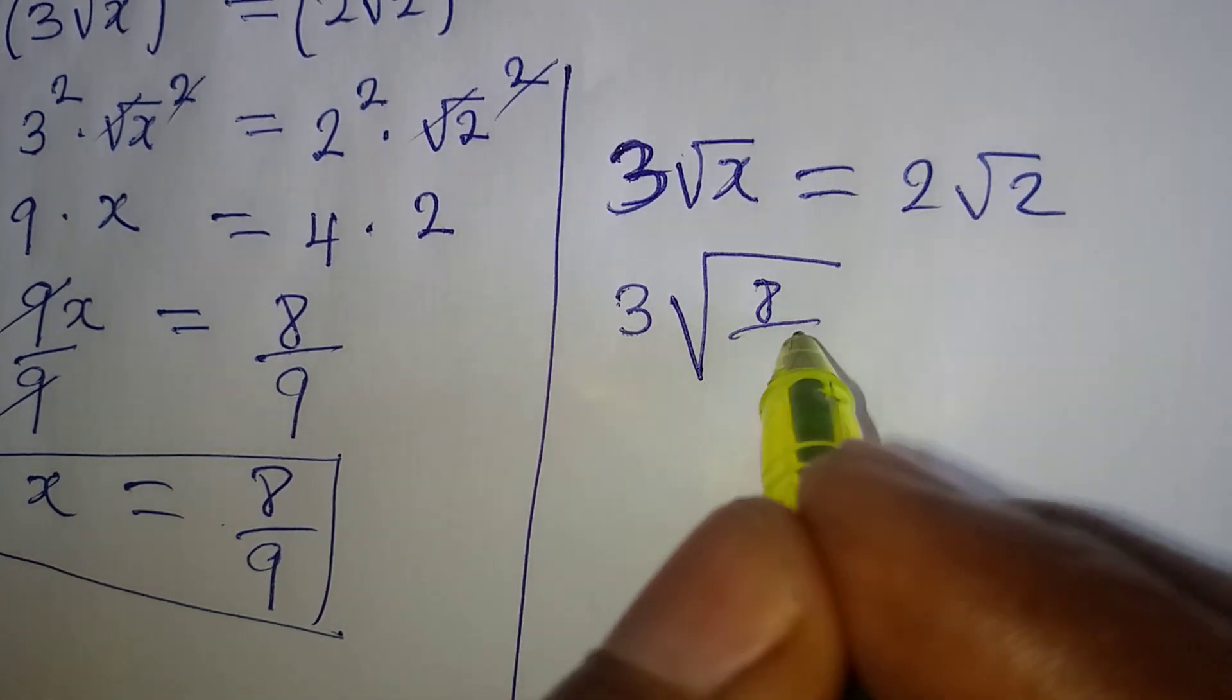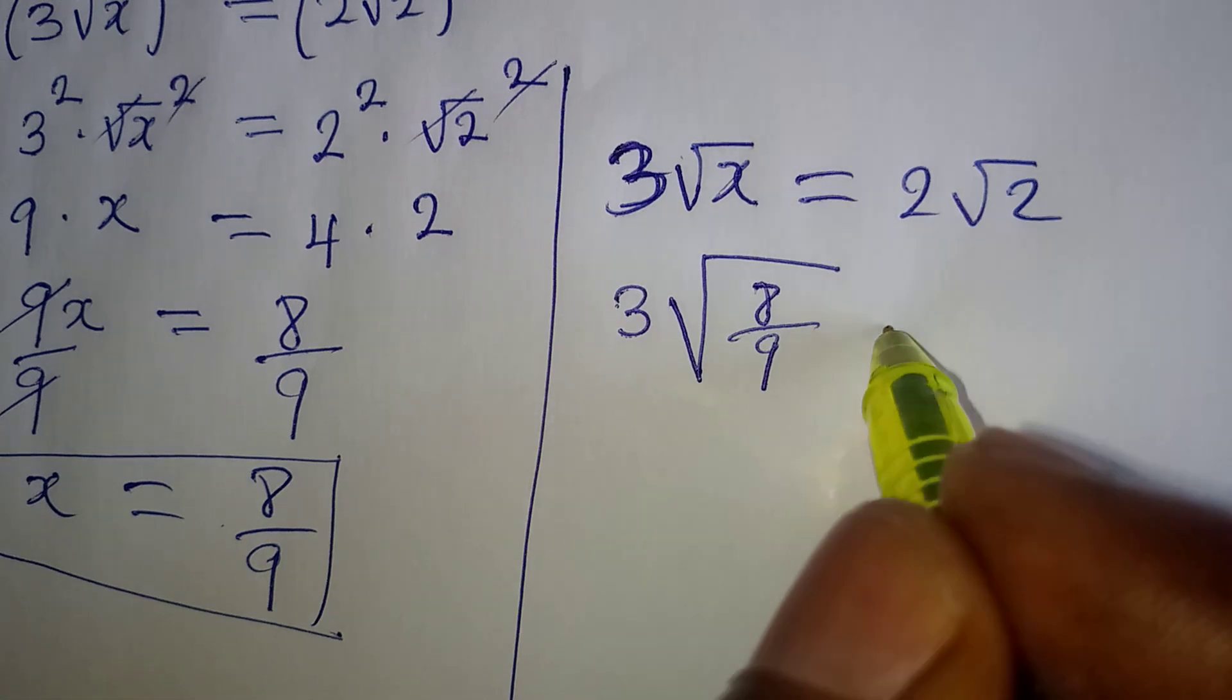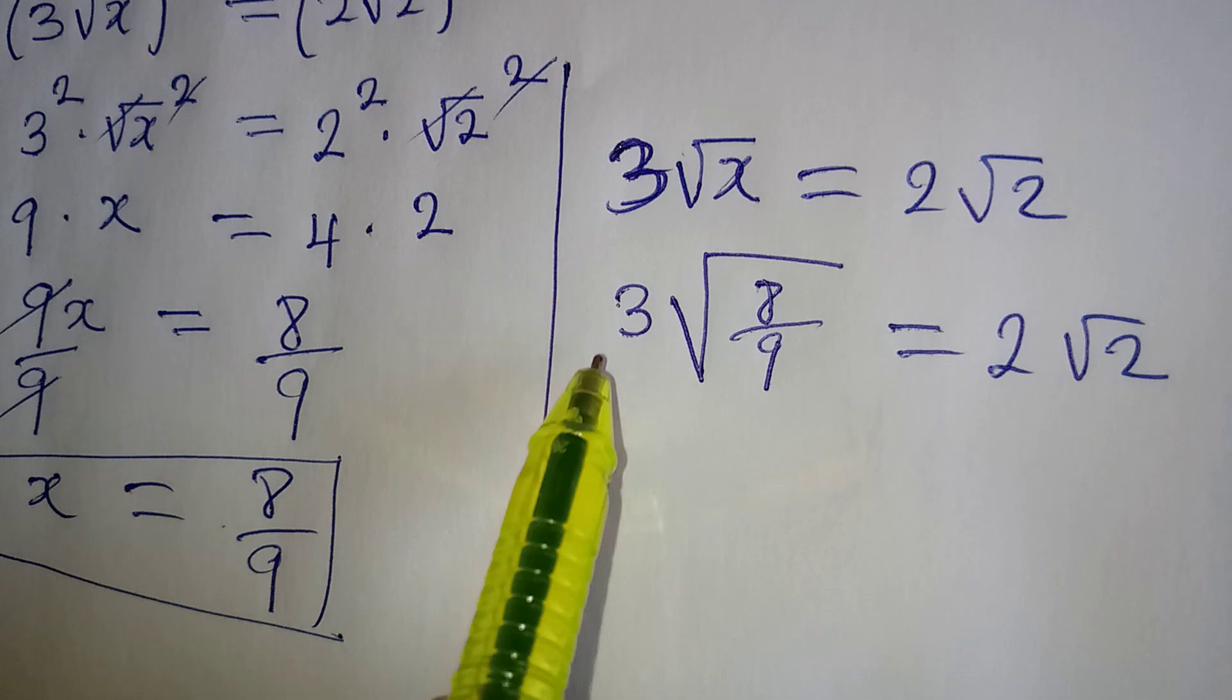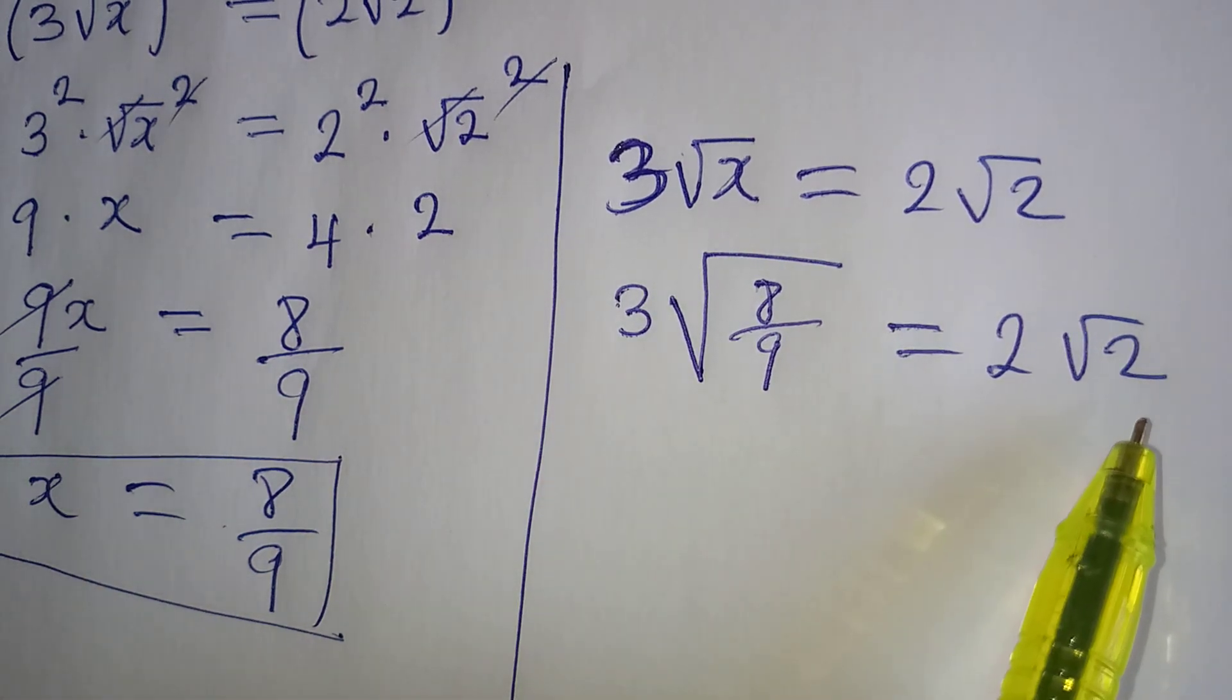the square root of 8 over 9, then being equal to 2 root 2. So I'm going to work on this and see if I'm going to have 2 root 2.